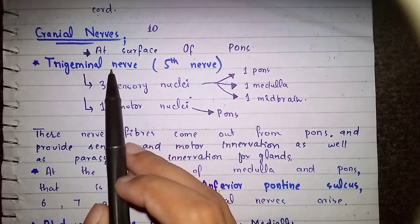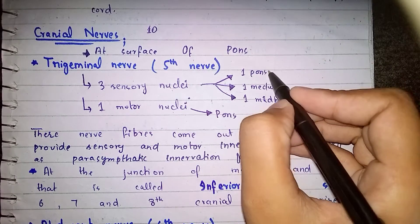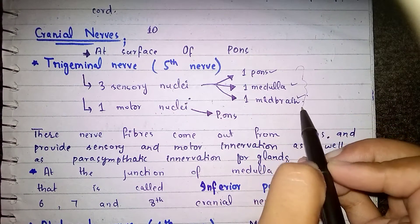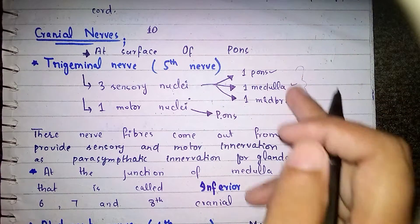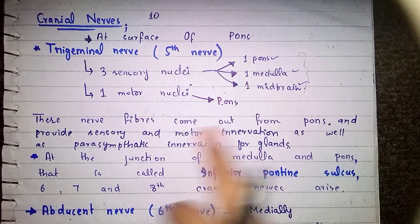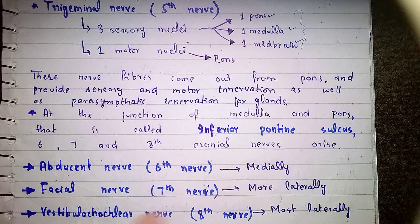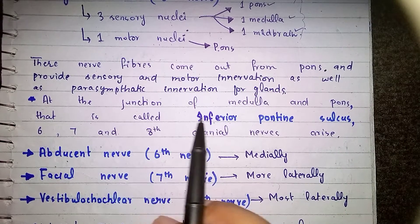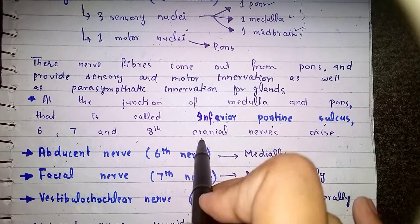First we will talk about the trigeminal nerve, which is the 5th cranial nerve. It has 3 sensory nuclei and 1 motor nucleus. Of the 3 sensory nuclei, one is present in the pons, one in the medulla, and one in the midbrain. The motor nucleus is only present in the pons. The nucleus is very large and extends throughout the brain stem, but the nerve fibers exit only from the pons. The 6th, 7th, and 8th nerves arise at the junction of medulla and pons, which is called the inferior pontine sulcus.